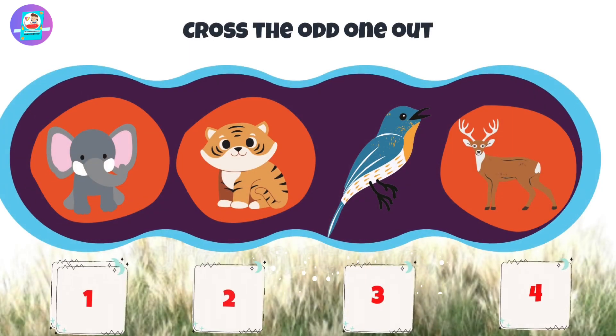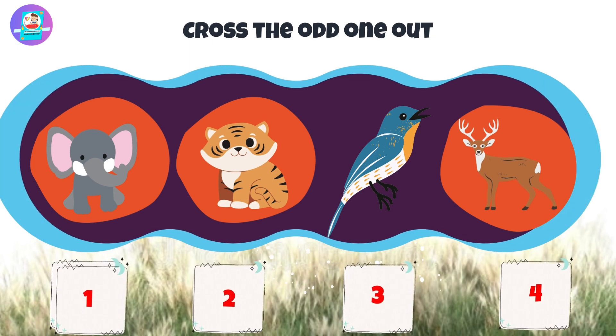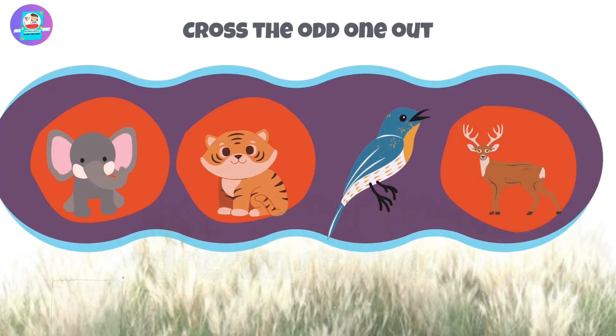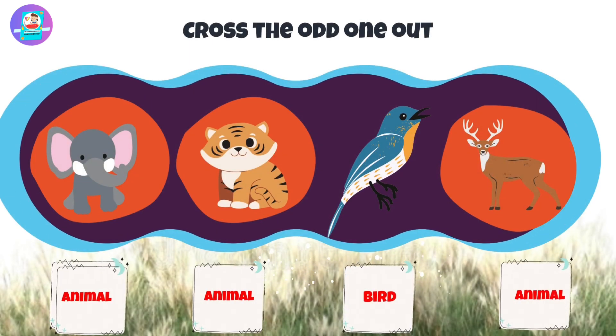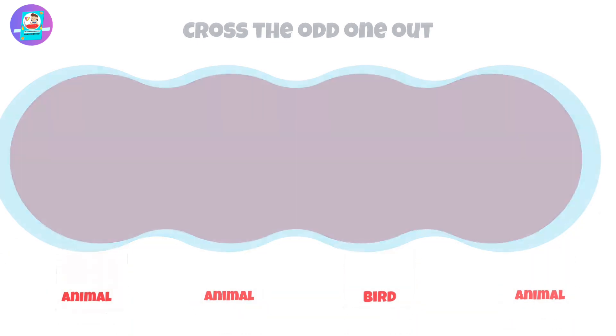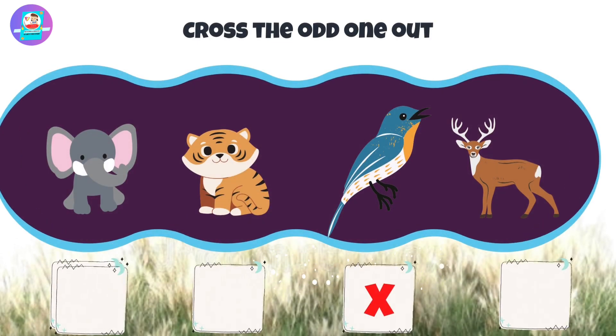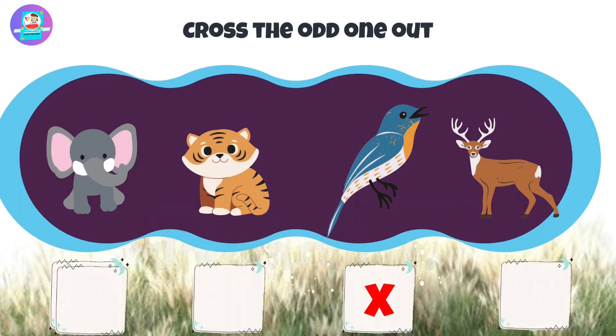Okay, let's check first. When we see here we have 3 animals and 1 bird that is odd. So put a cross on this bird.